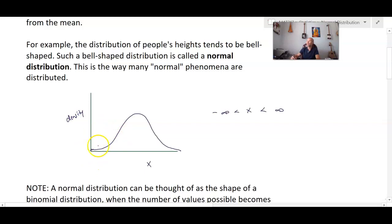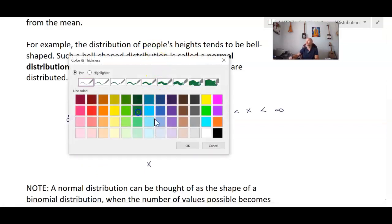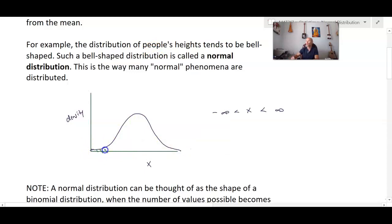And in the same regard as other distributions, we know that for a probability density function, the area under this normal curve is going to be 1. But keep in mind that this goes on infinitely in both directions. It just gets very, very close to 0.